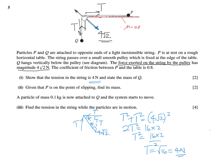Now state the mass of Q. At this stage, no motion is mentioned, so we assume Q is stationary. With no acceleration, T = mg. We already found T = 4 N, so 4 = m × 10, therefore m = 0.4 kg. So mQ = 0.4 kg.